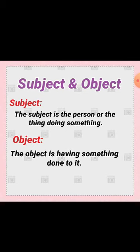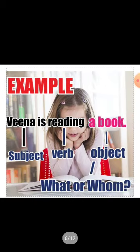Let's understand this with the help of an example: 'Veena is reading a book.' Who is doing something? Veena — so Veena is the subject. What is the action performed by Veena? Reading — so reading is the verb. And what is she reading? A book — so a book is the object. You use 'what' or 'whom' to find out the object.